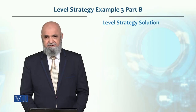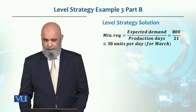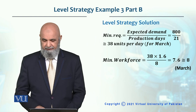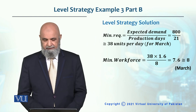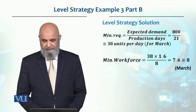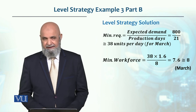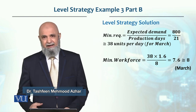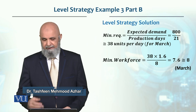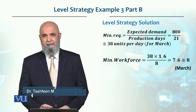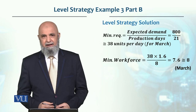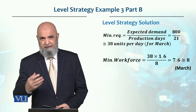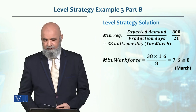Let's look at the further solution. We have calculated that the minimum requirement in March is 38 units. The workforce needed for March is 38 units multiplied by 1.6 hours divided by 8 hours available per worker, which gives 7.6 workers. Since we cannot keep fractional workers, we round off to 8 workers.